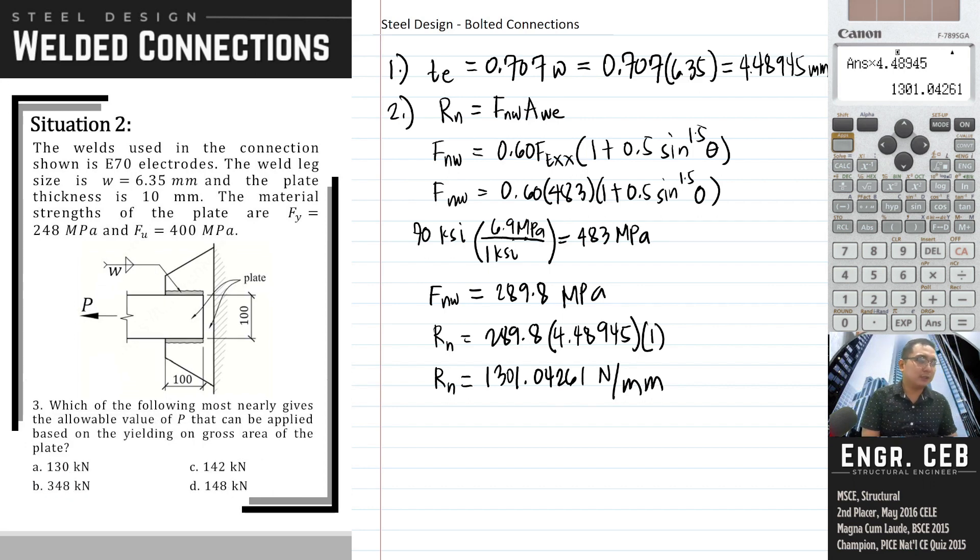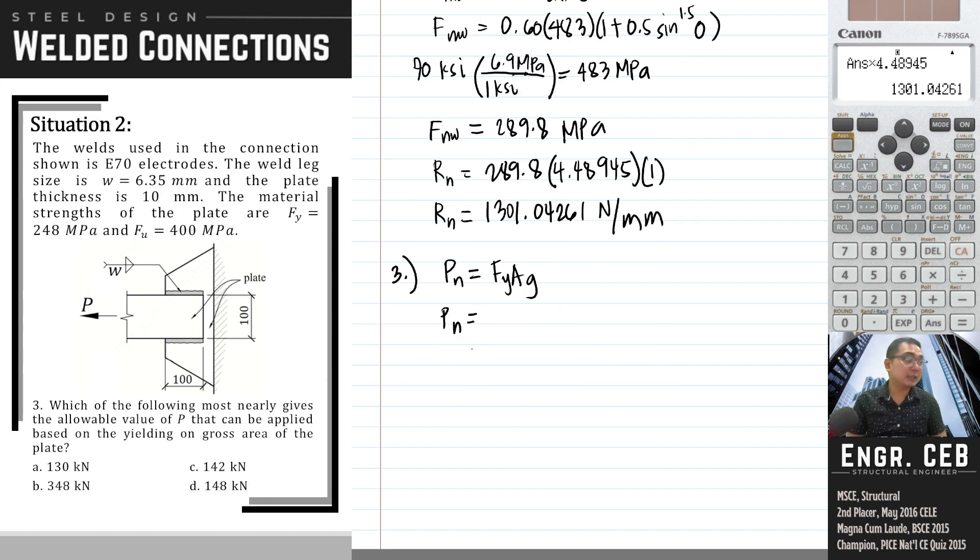Next, which of the following most nearly gives the allowable value of P that can be applied based on yielding on gross area of the plate? Pn equals fy times Ag. Our fy is 248.